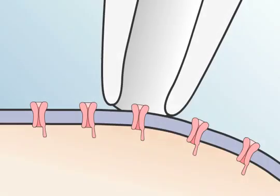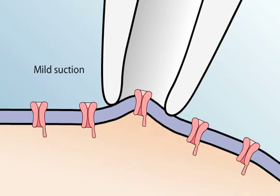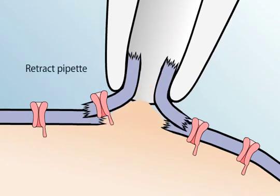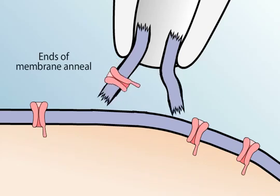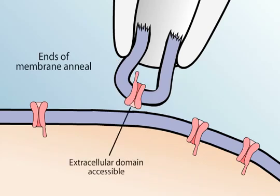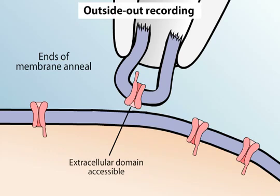Alternatively, if the pipette is retracted while it's in the whole-cell configuration, a membrane patch is produced that has its extracellular surface exposed. This arrangement, called the outside-out recording configuration, is optimal for studying how channel activity is influenced by extracellular chemical signals, such as neurotransmitters.